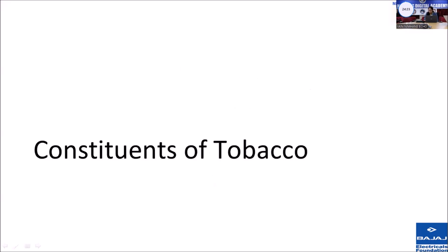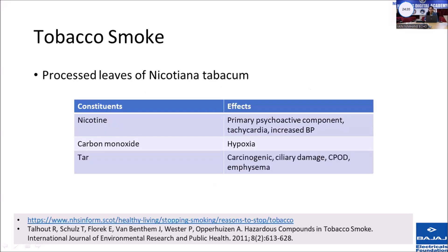Tobacco is prepared from the processed leaves of the plant Nicotiana tobacum. Nicotine is the primary psychoactive component, and it can cause tachycardia and increased BP. The smoke also contains carbon monoxide, which would bind to your hemoglobin with a very high affinity to form carboxyhemoglobin, and this causes hypoxia and acidosis in the body.